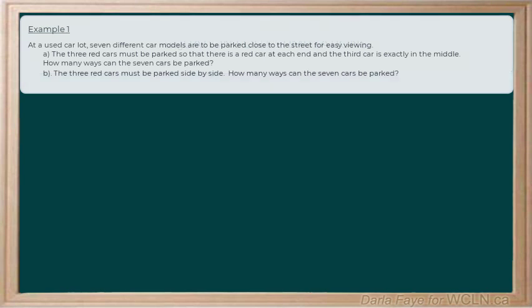At a used car lot, seven different car models are parked close to the street for easy viewing. Part A says, the three red cars out of those seven must be parked so that there's a red car at each end, and a third car is exactly in the middle.